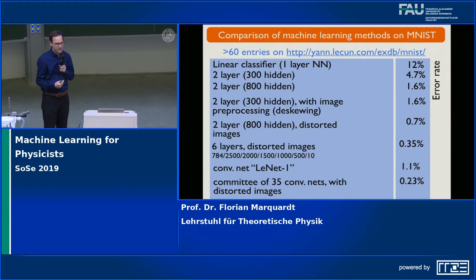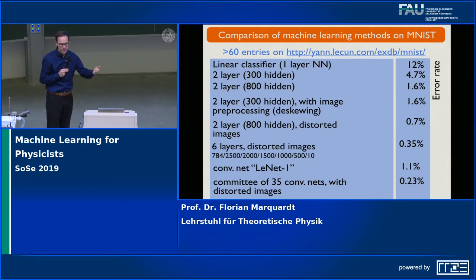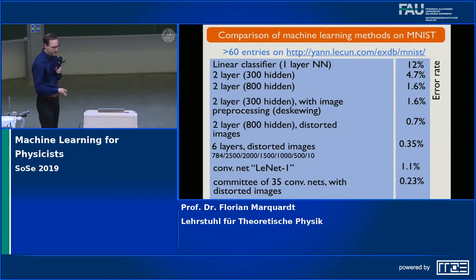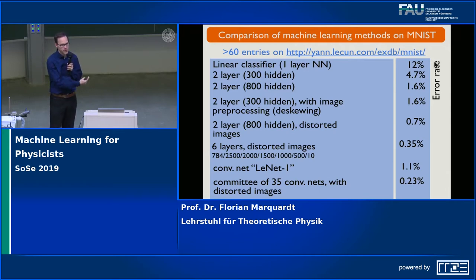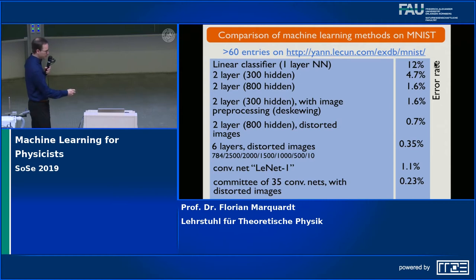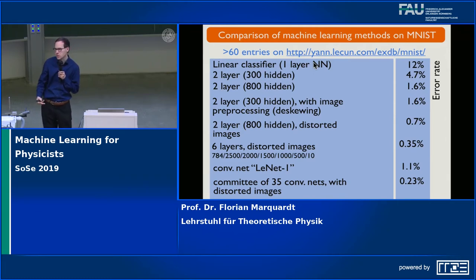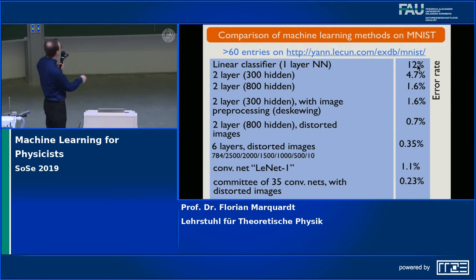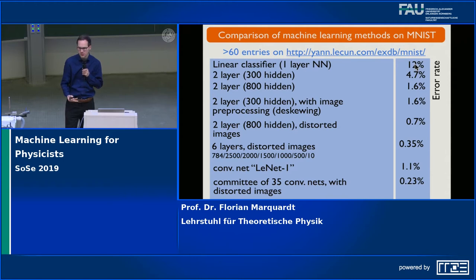Computer scientists have investigated the performance of image classification tasks extensively, and in particular the very famous MNIST handwritten digits classification task. I found a nice database on a website where different machine learning methods were compared for this MNIST example. The simplest is a linear classifier — basically a single layer where input goes directly to output — and the error rate is 12%. That seems high, but it is also a very simple solution.